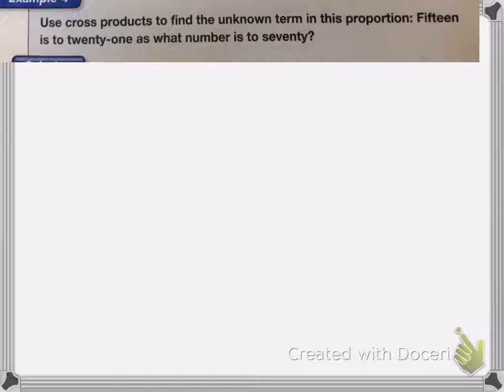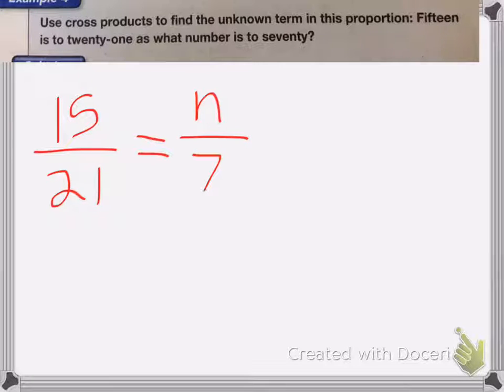So here we have use cross products to find the unknown term in this proportion. 15 is to 21, as what number? I'm going to just put an n. What number is to 70?